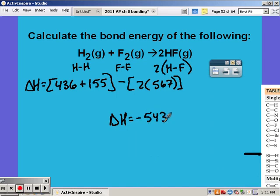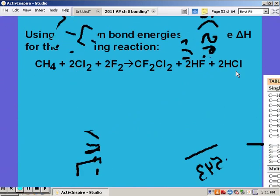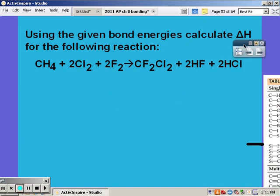Since the bond enthalpies were in kilojoules per mole, your answer is always in kilojoules per mole. And so again, this is negative delta H, which means it's exothermic. It's going to release energy.